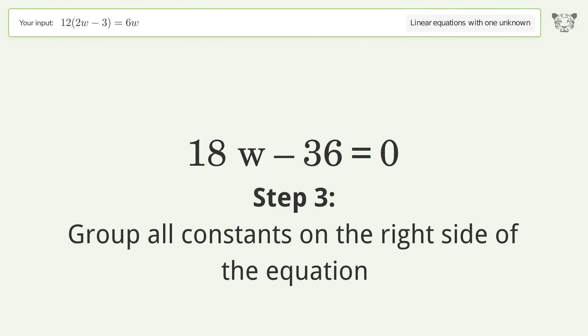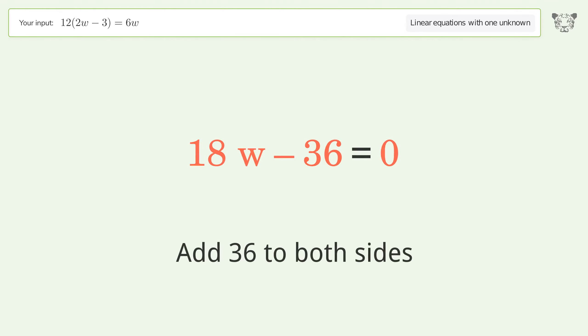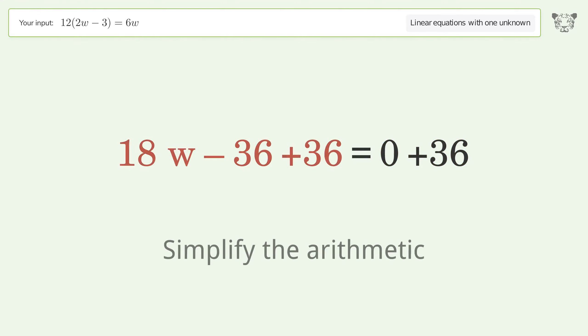Group all constants on the right side of the equation. Add 36 to both sides. Simplify the arithmetic.